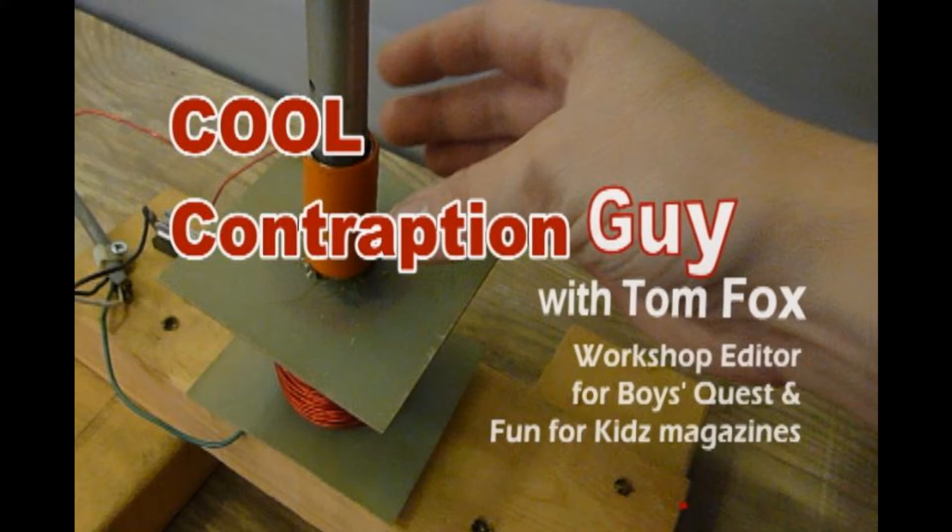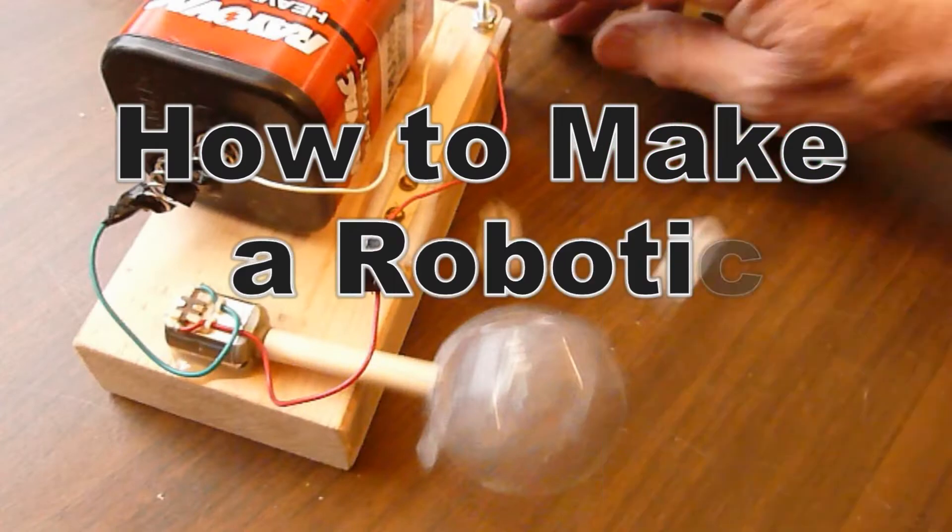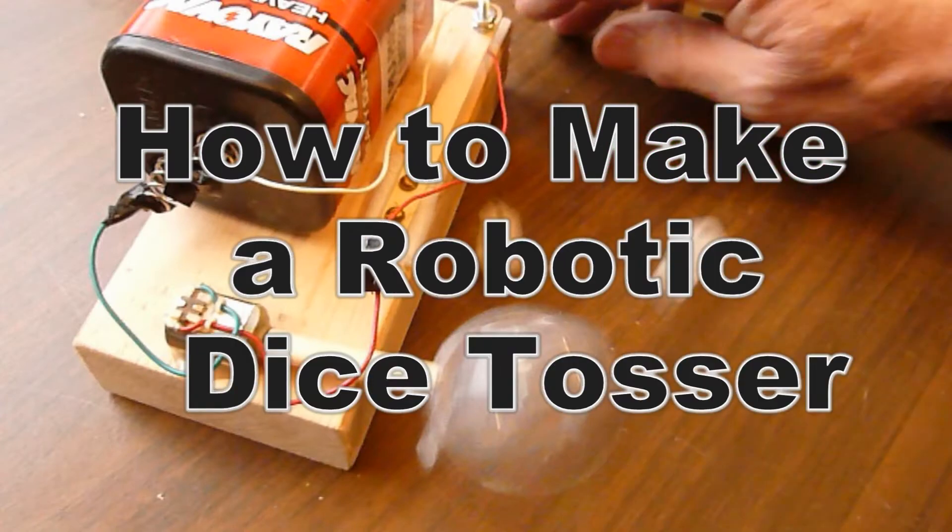The Cool Contraption Guy with Tom Fox, workshop editor for Boys Quest and Fun For Kids magazines, presents How to Make a Robotic Dice Tosser.